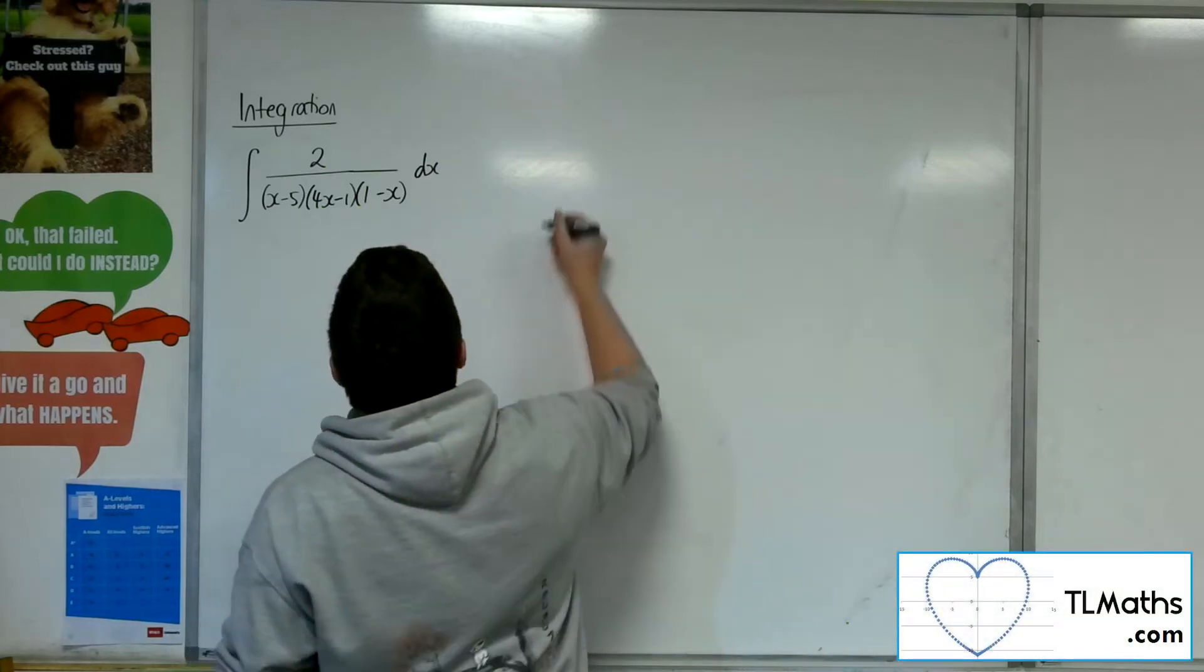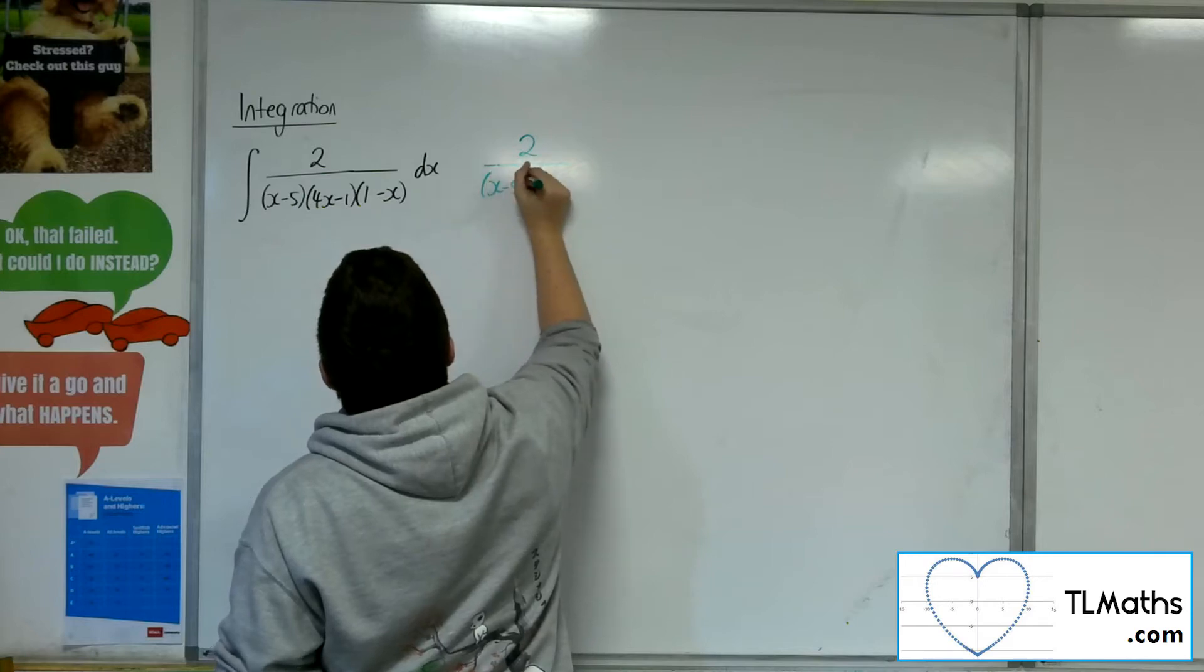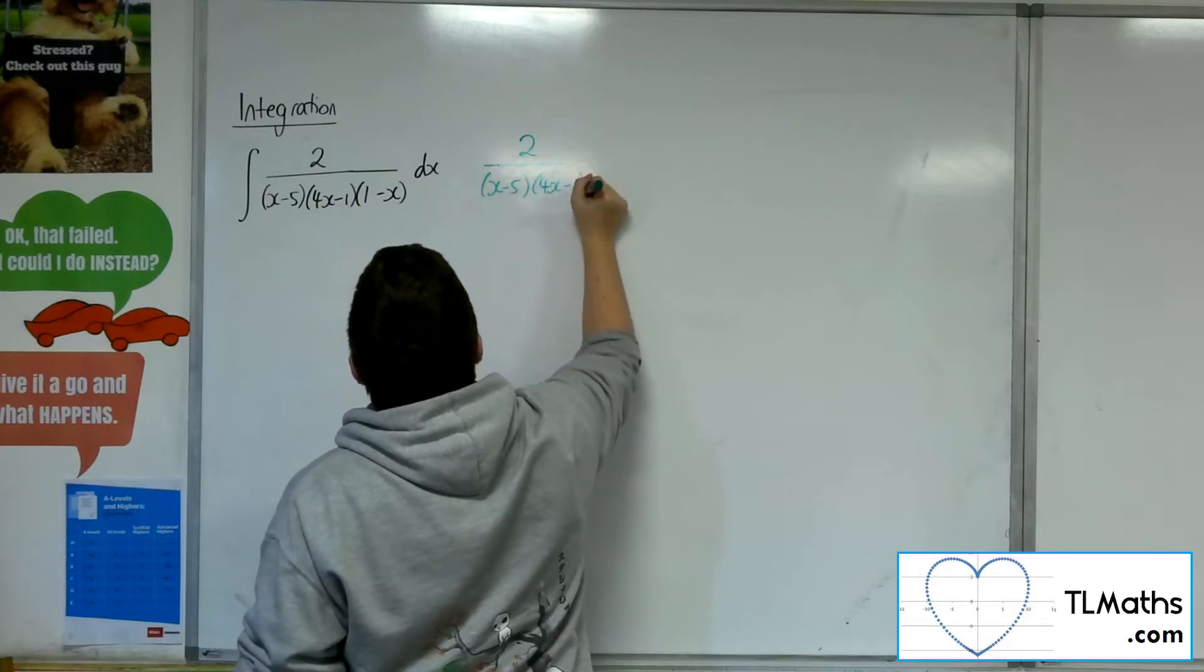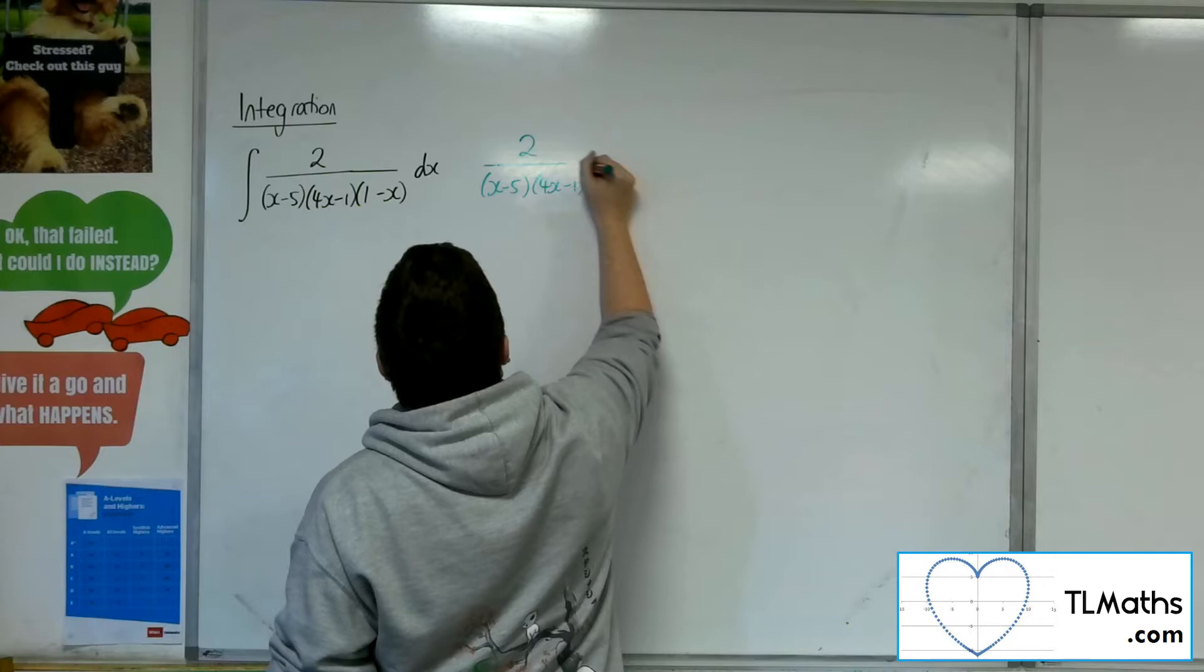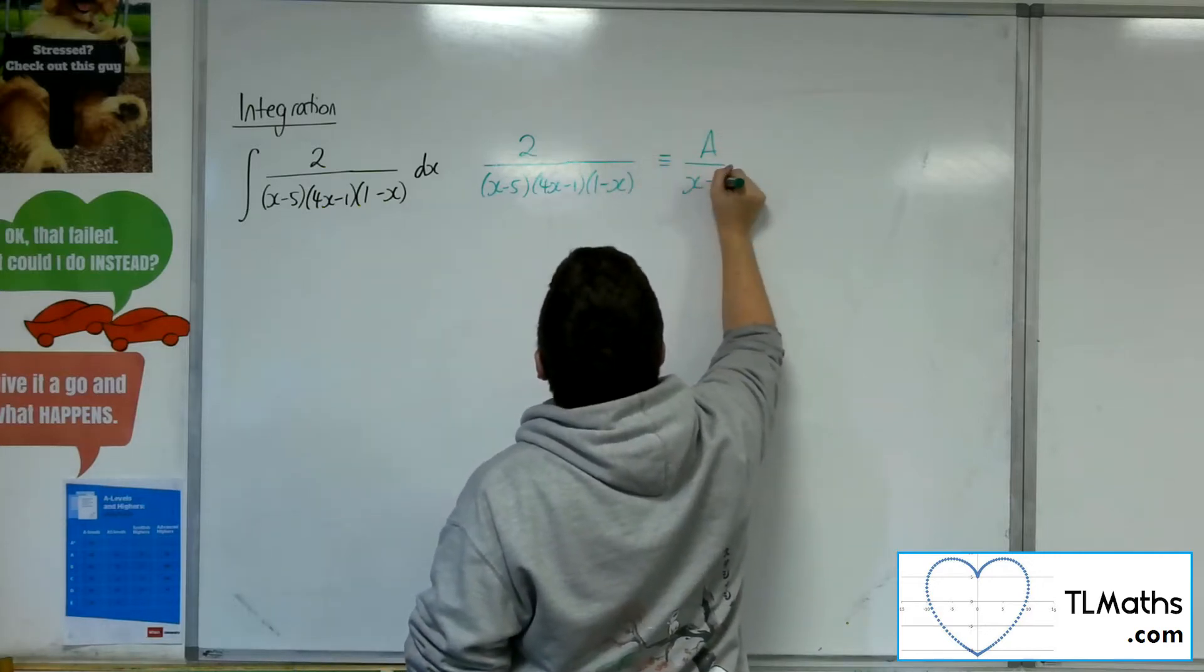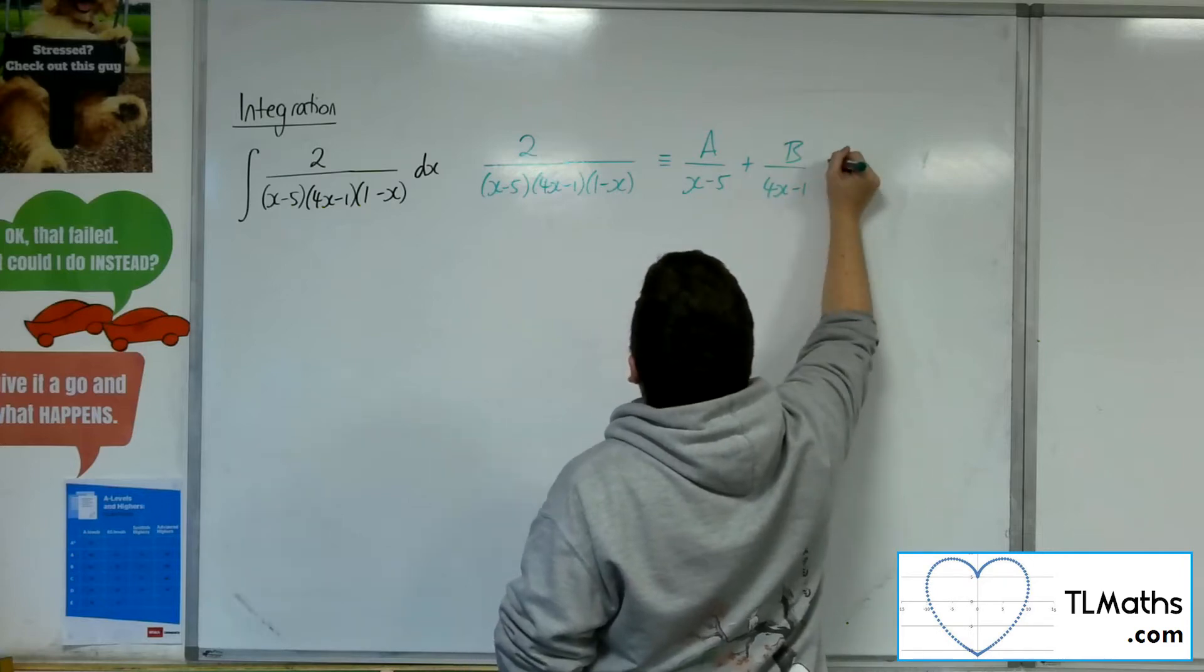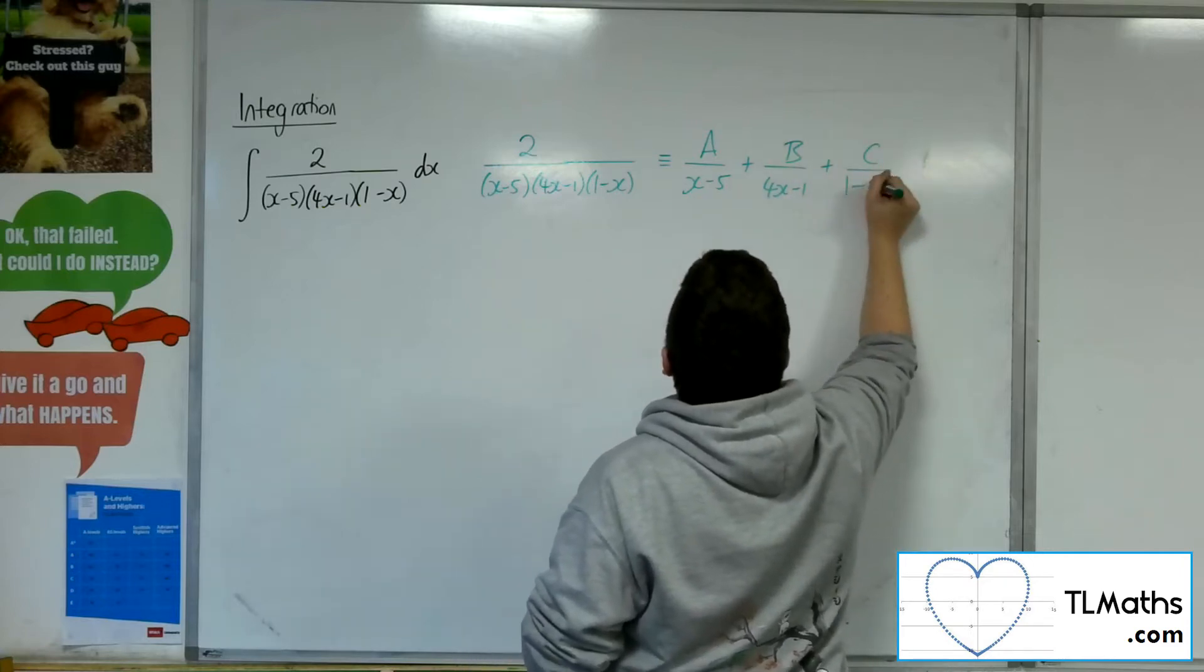Going straight into partial fractions, 2 over (x-5)(4x-1)(1-x) can be written as A/(x-5) + B/(4x-1) + C/(1-x).